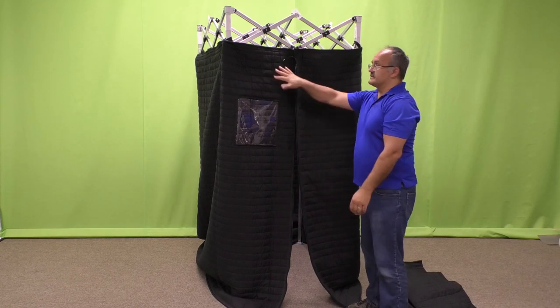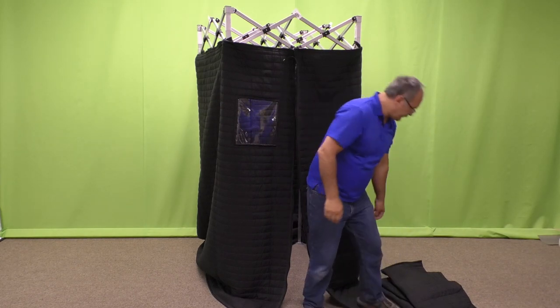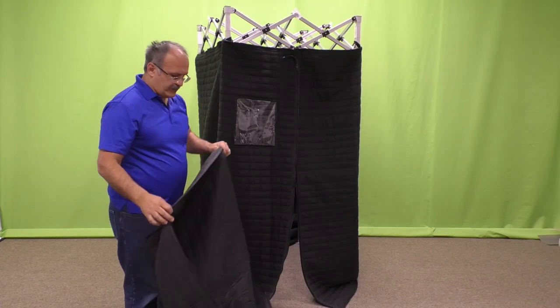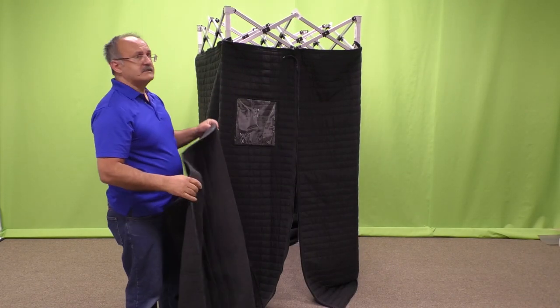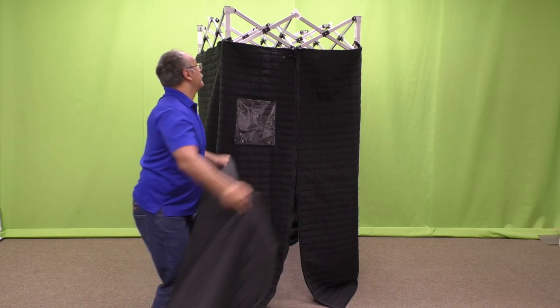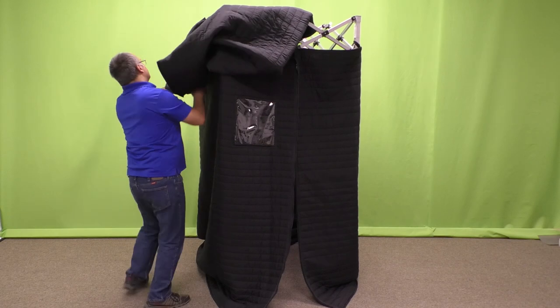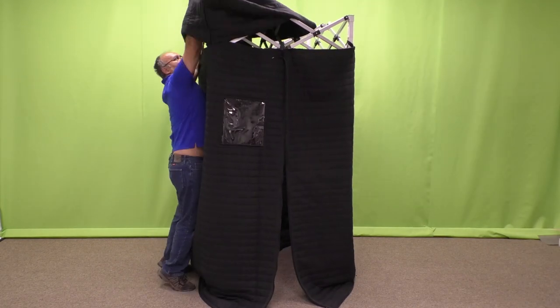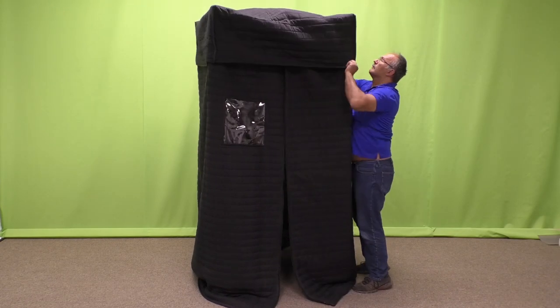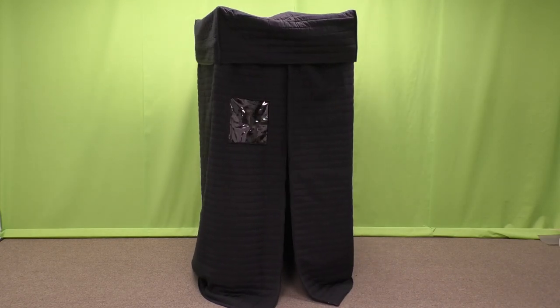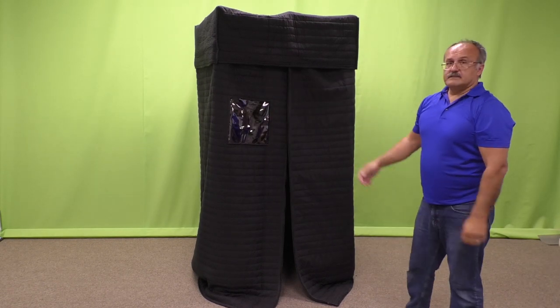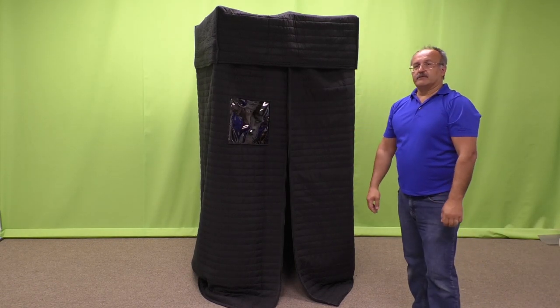Now, once the sides are assembled, we need to put the roof over. The roof is just one piece. It doesn't attach. It simply sits on top of the frame. And this completes the assembly of AVB-3.